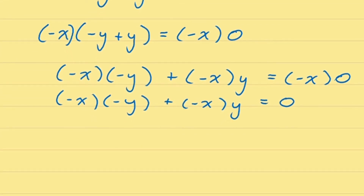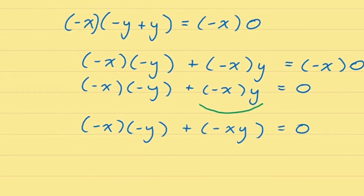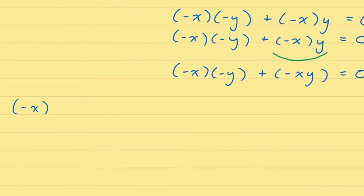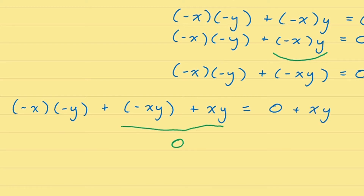Another thing we might notice is that this second term, negative x times y, looks familiar — it was the subject of Proposition 2, where we showed that negative x times y is the negative of xy. So we can look at our equation as now saying: negative x times negative y, plus the negative of xy, equals 0. If at this point we cancel out the negative xy term by adding xy to both sides, we will produce the equation that we're looking for.